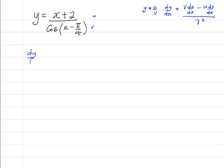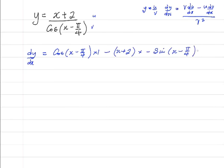Here my u is equal to x plus 2 and my v is cosine(x minus π/4). So dy by dx would be equal to v, which is cosine(x minus π/4), times du by dx. u is x plus 2, and when you differentiate that you simply get 1. Minus u, which is x plus 2, times the differential of v. When you differentiate cos you get minus sine, so this is minus sine(x minus π/4) times 1. And this is all over v squared, which is cosine squared(x minus π/4).